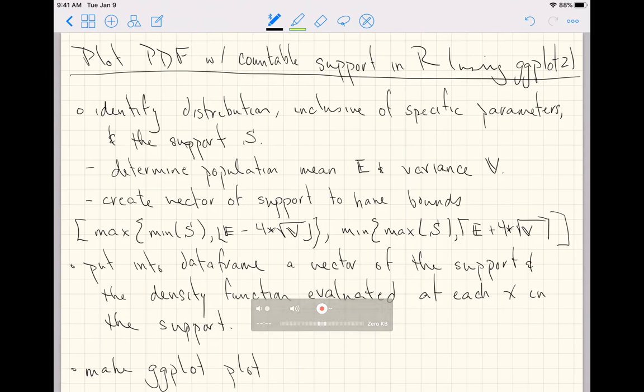This is going to be a video to plot a probability density function with countable support in R using ggplot2. Step 1, identify the distribution inclusive of specific parameters and the support.